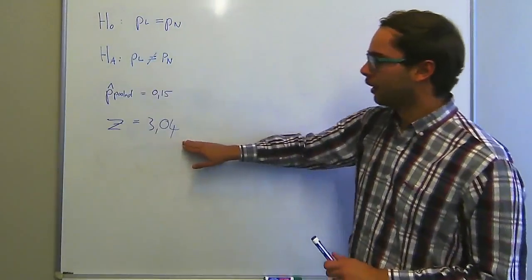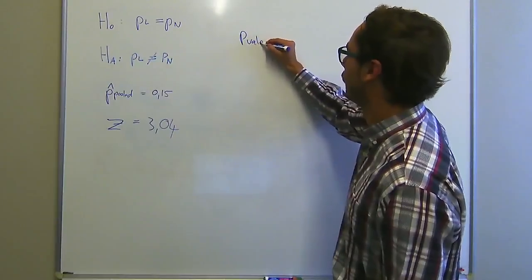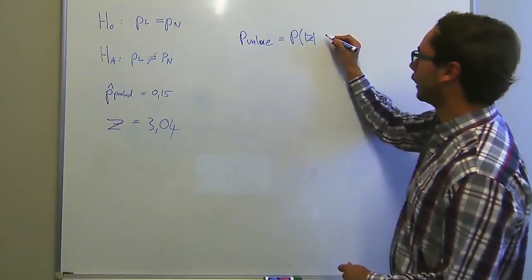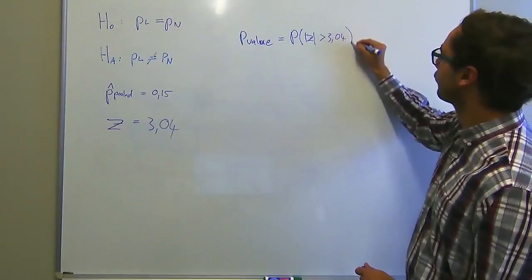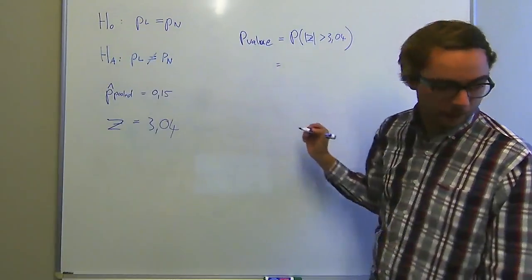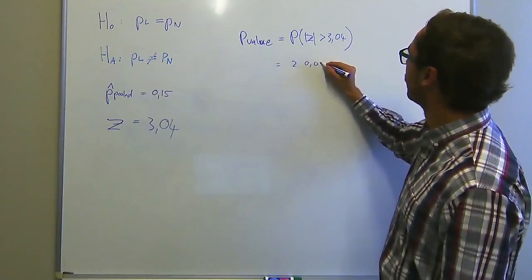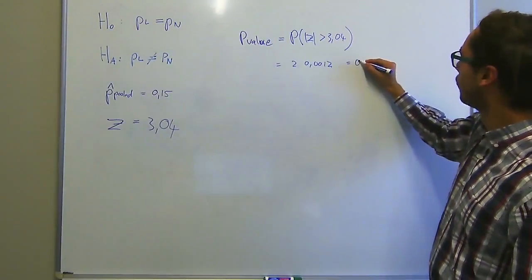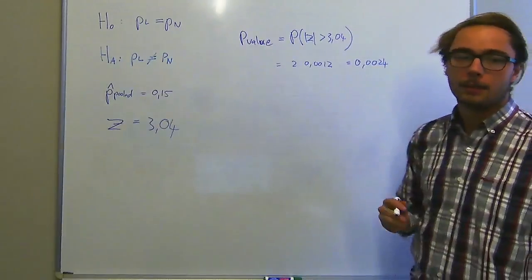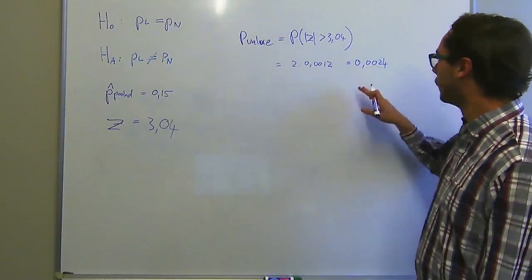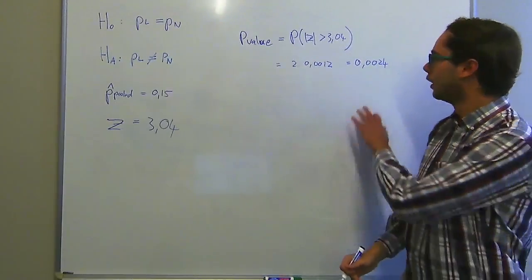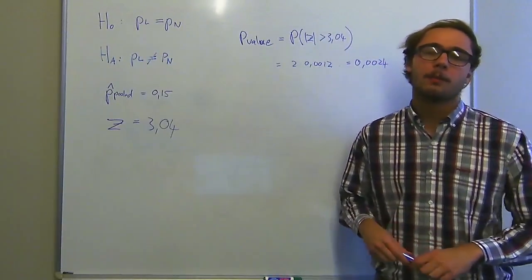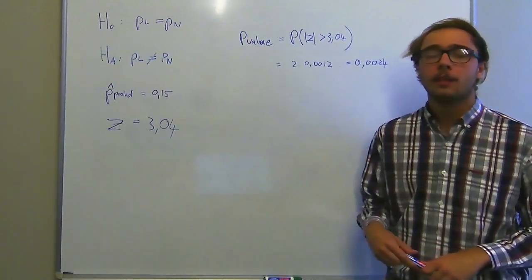Now that we have our Z value, we find the P-value: P = P(|Z| > 3.04). This gives us 2 × 0.0012 = 0.0024, because it's two-sided — a very small number. Assuming an alpha of 0.01, we reject the null hypothesis. This means there is a statistically significant difference in the proportion of virologic failure between patients who took Nevirapine versus patients who took Lopinavir.